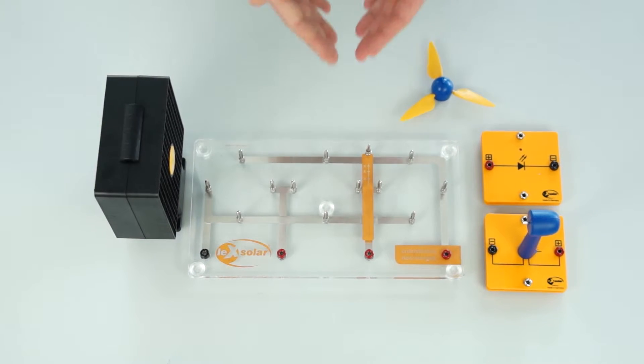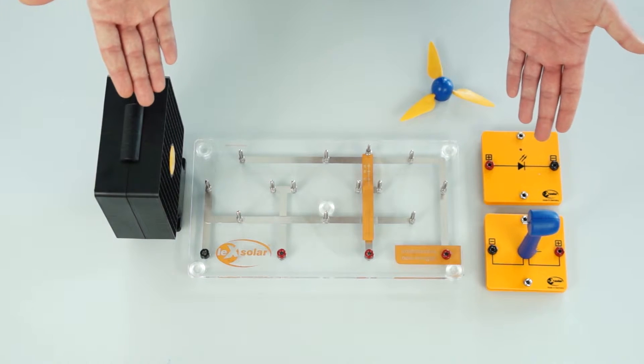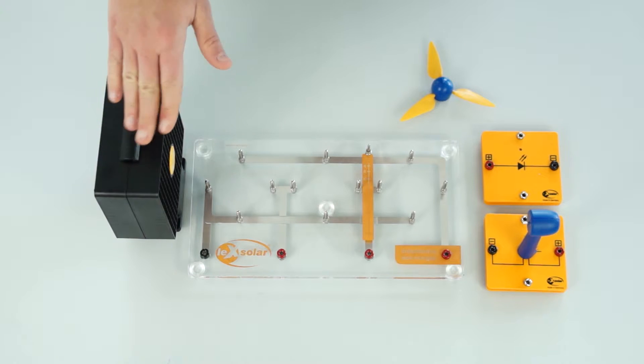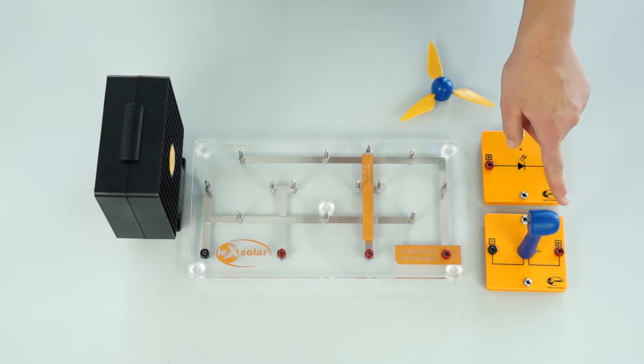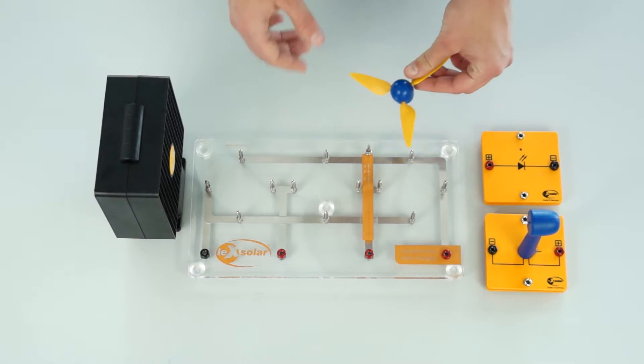We have now collected all the related components for the experiment. The wind machine. The base unit. The wind turbine on the module blade. And our LED. Now we just need to attach the rotor blades to the wind turbine.